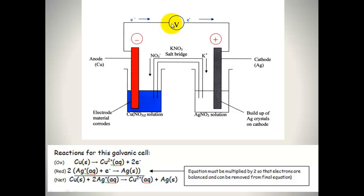Looking at this galvanic cell, you'll see there is the anode, which is made of copper. The reaction occurring at the copper is that copper solid is disintegrating into copper two-plus ions and two electrons. So electrons are being produced here at the anode, and they go around to the other electrode called the cathode.